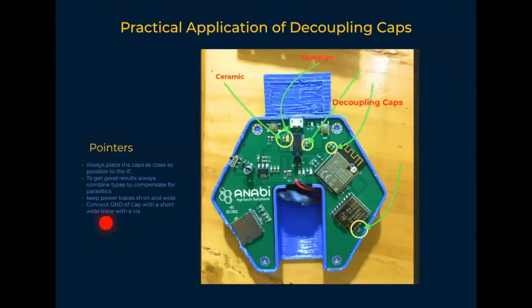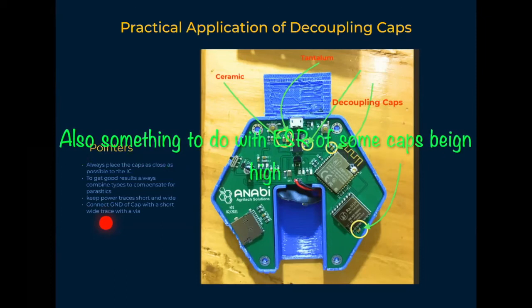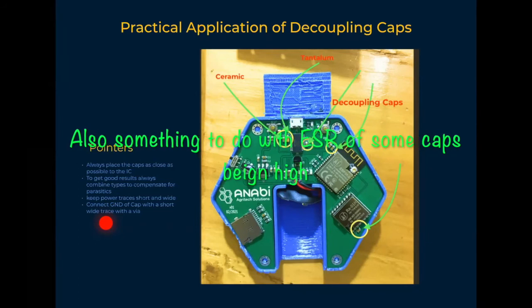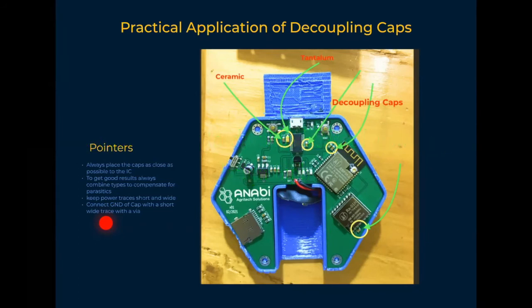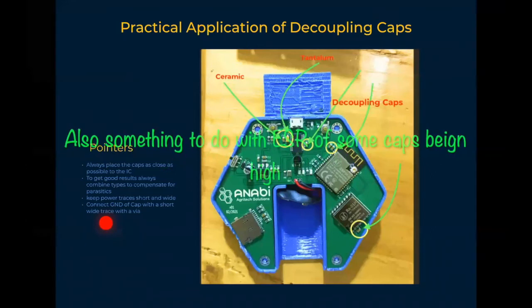For good results, it's always advisable to combine cap types. If you're using more than one, do combine two types — maybe an electrolytic cap and a ceramic cap. We do this because some caps have high parasitics, so they will not deliver the capacitance as registered and will affect performance. To compensate for that, we include them as two.